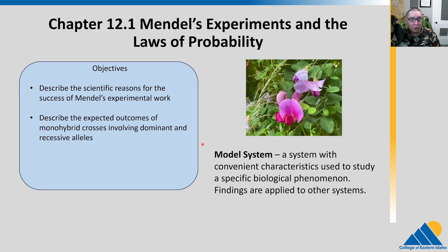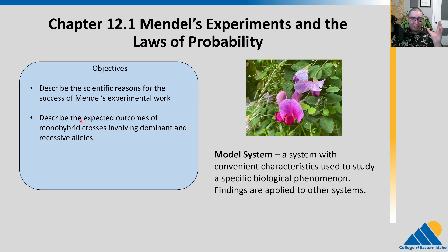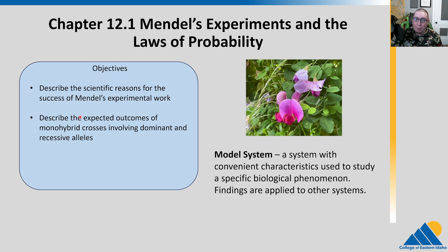In the first section, we're going to talk about Mendel's experiments and the laws of probability. We need to understand probability to understand how Mendel worked out the rules of genetics. We'll talk about the scientific reasons that Mendel's work was a success, and we'll talk about expected outcomes for the monohybrid cross involving dominant and recessive alleles. But first, let's talk about the model system that Mendel used.